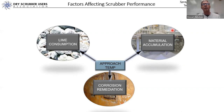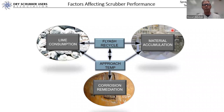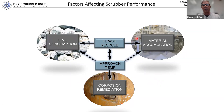The second factor is fly ash recycle — not everybody has it, but if you have that feature of recirculating FGD byproduct, it's a very important factor affecting performance. It directly affects lime consumption, directly affects material accumulation, and interacts with approach temperature. Third is atomization and dispersion — how small are those droplets ejected from the rotary atomizer or dual fluid nozzle, and how evenly are they dispersed into the gas stream.